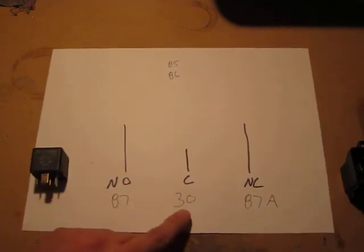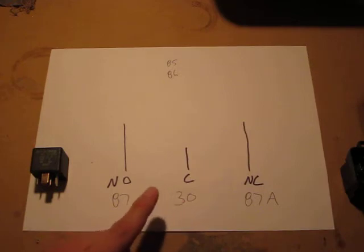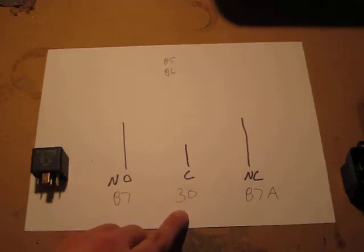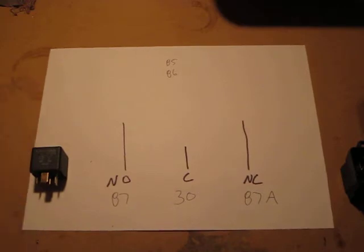So you hook your common power or your common device up to the common and the other end to wherever it's going to go. These can work for turning things on and off, switching a light, switching anything really.